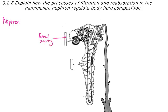The renal artery leads into this vast network of arterioles — very, very small arterioles, in fact capillaries — called the glomerulus.